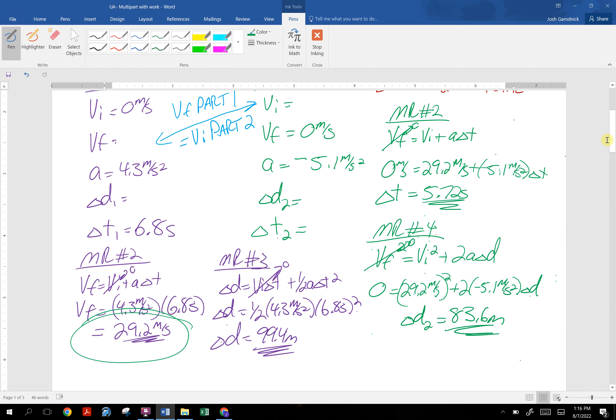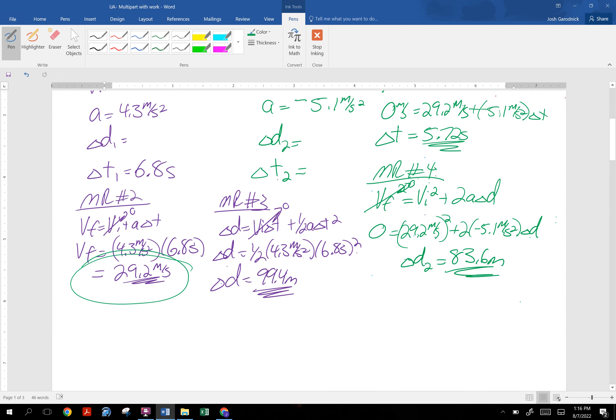Now, if we want to get total distance, total time, you know what to do. Delta d one plus delta d two is the total. So basically just 99.4 meters plus 83.6 meters, and we get a total of 183 meters. And to get the total time, we're just adding the times to get the total.